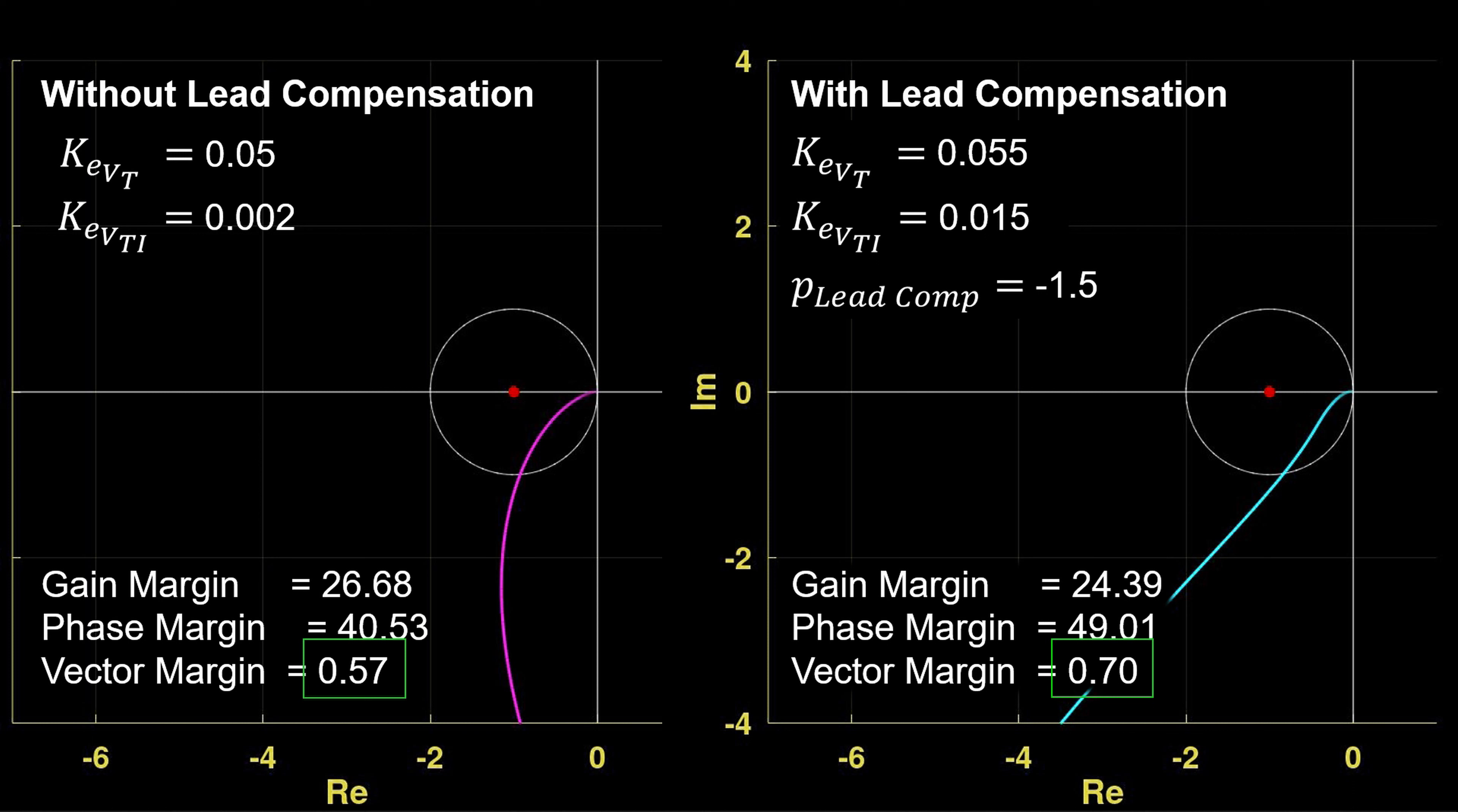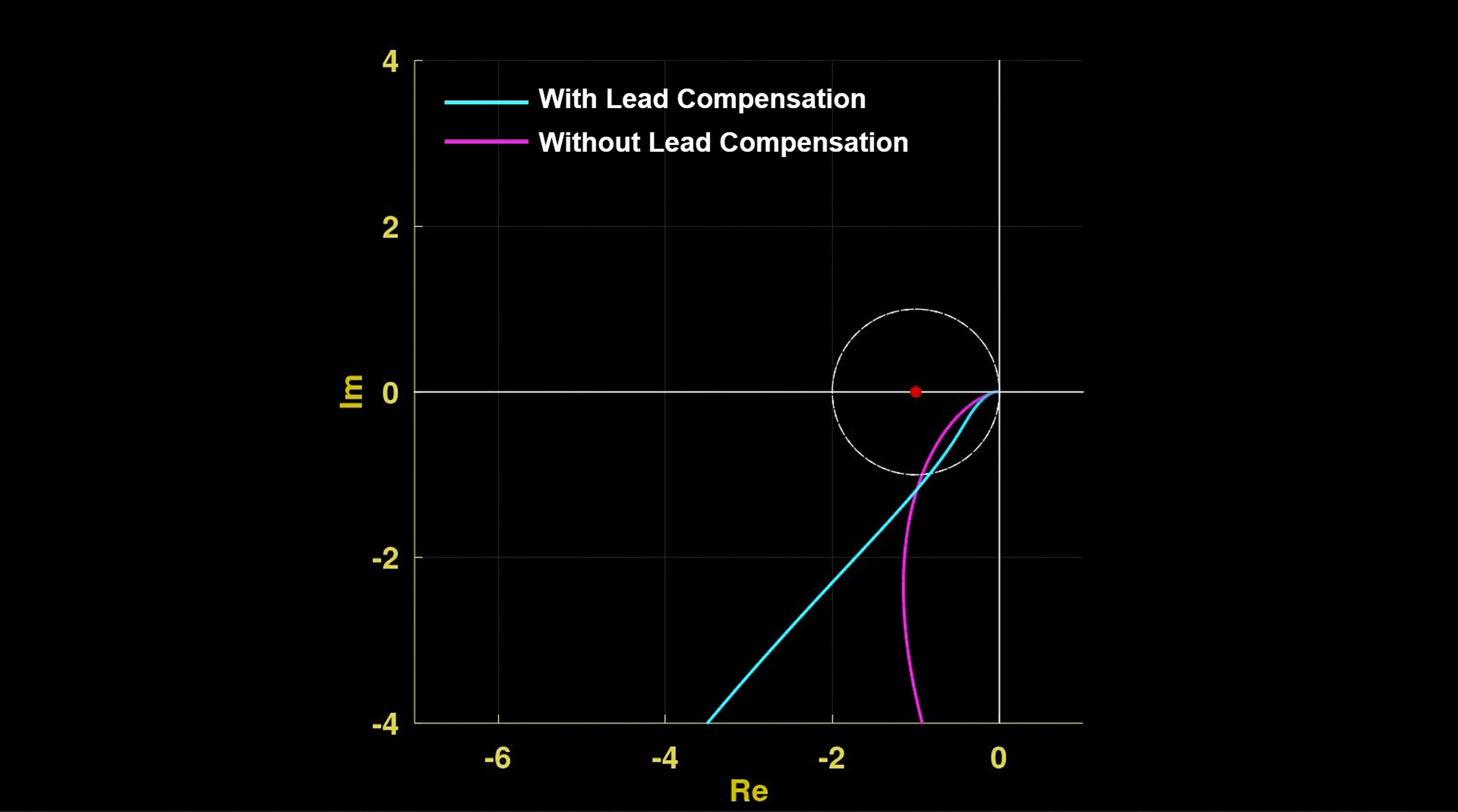So, while both systems are robust, actually the lead compensated controller has improved robustness in two key metrics with a slight reduction in gain margin. We can see that in the unit disk we have additional phase at high frequencies and reduced phase at low frequency.